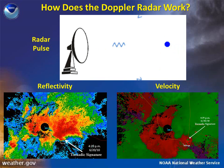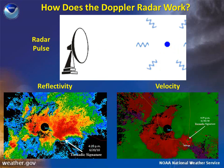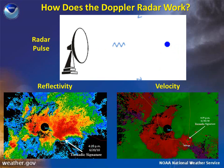How does the Doppler radar work? The antenna shoots out pulses of electromagnetic energy at specific elevation angles above the ground. When these pulses of energy encounter an object in the atmosphere, such as a raindrop, hailstone, or snowflake, part of the energy pulse bounces off of the object and returns to the receiver.